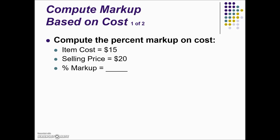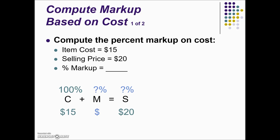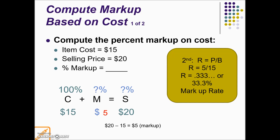Here we have an example. We're given a cost and selling price and asked for the percent markup. Because these are based on cost, that determines where our 100% or our base quantity is — markup based on cost means 100% goes to cost. We know the cost is $15. Since we have the selling price and the cost, we subtract to find the markup, which gives us a $5 markup. Now solving for rate, we take the part $5 divided by the base of 15 and convert to a percent, giving us a markup rate of 33.3%.